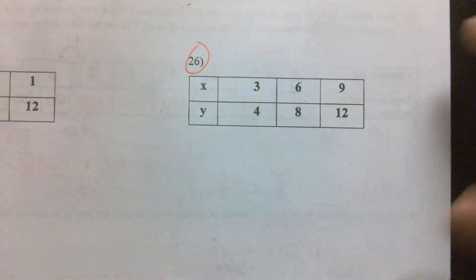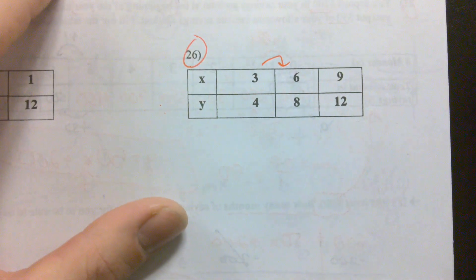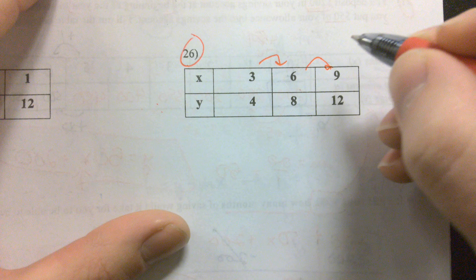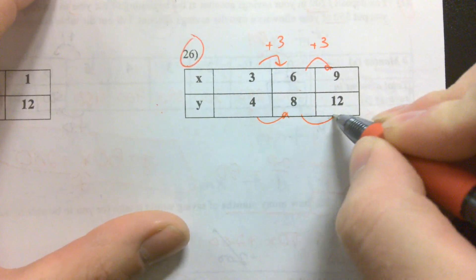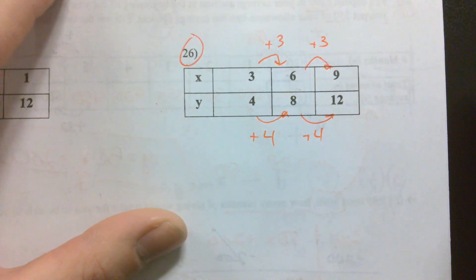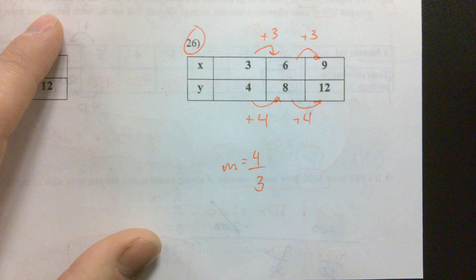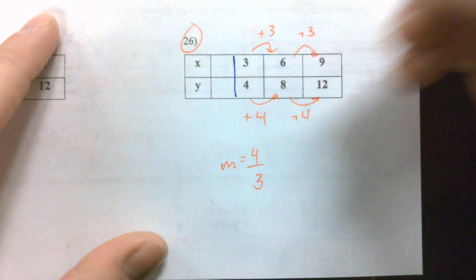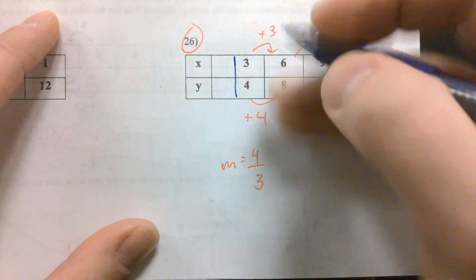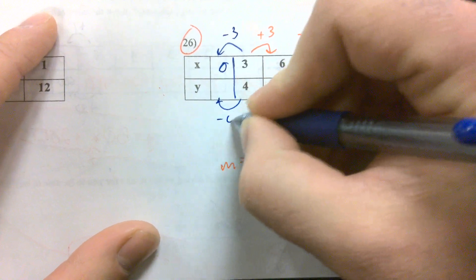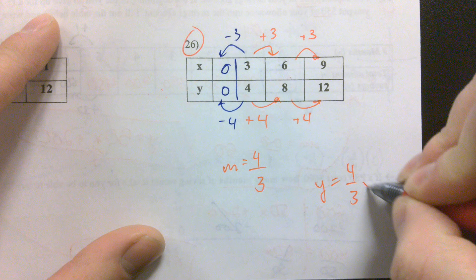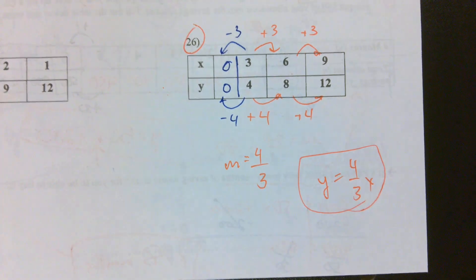Last but not least, writing an equation from a table. Obviously, we see a table. We're going to do our arrows. Plus 3, plus 3. On the bottom, we've got plus 4, plus 4. So my M is going to be the change in Y over the change in X, 4 over 3. If we want to find our B, we've got to go backwards. So we'll minus 3 to get 0, minus 4 to get 0. Y is equal to 4 over 3 X. Oh, I just put them backwards. Good. Make the change in red so you know what to do when the test comes around. And then go ahead and pass up F04 and take your notebooks out for us.